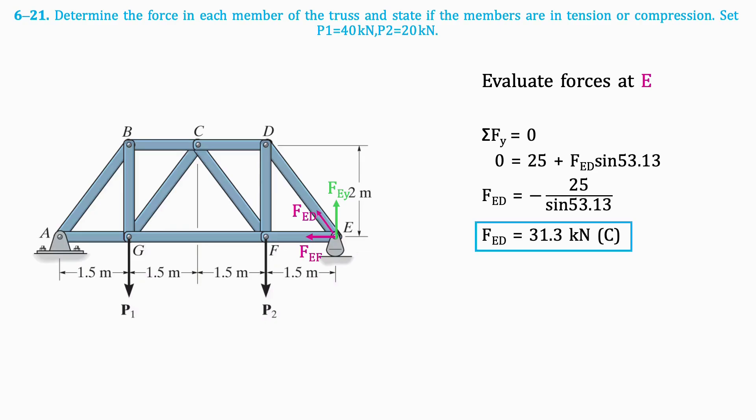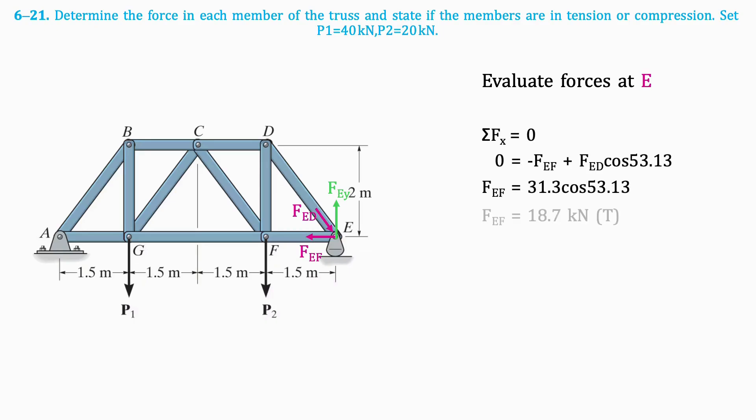Next, we'll take a look at joint B. Since we previously determined that FAB is a compression force, we need to flip it on the free body diagram.